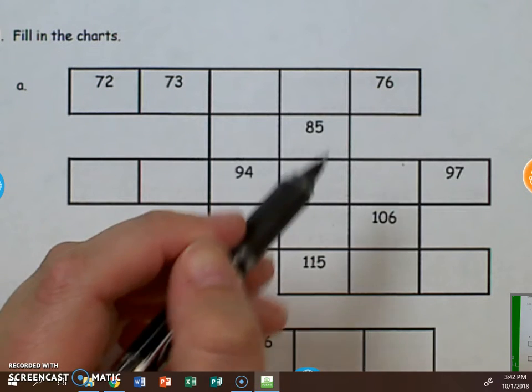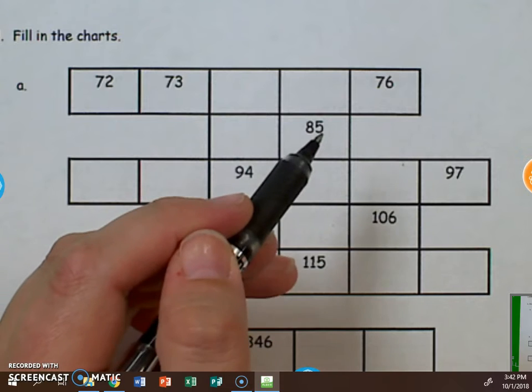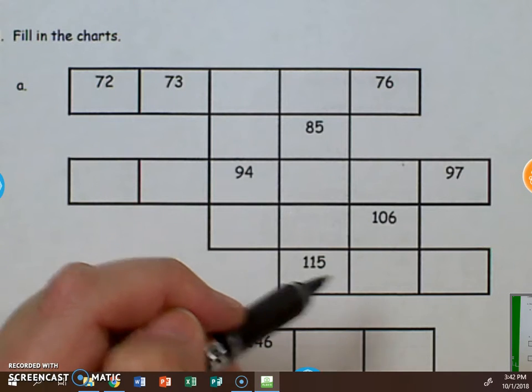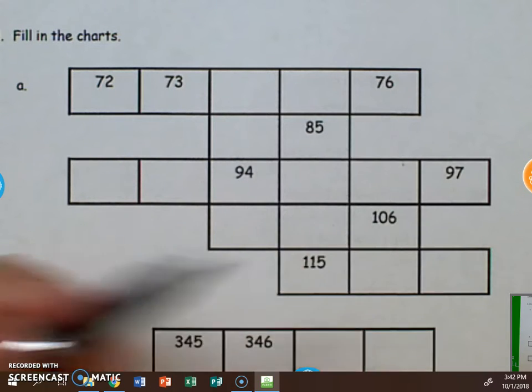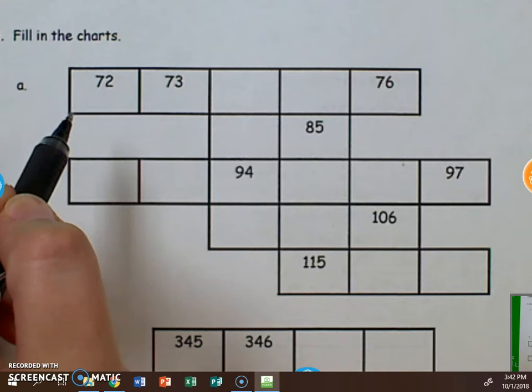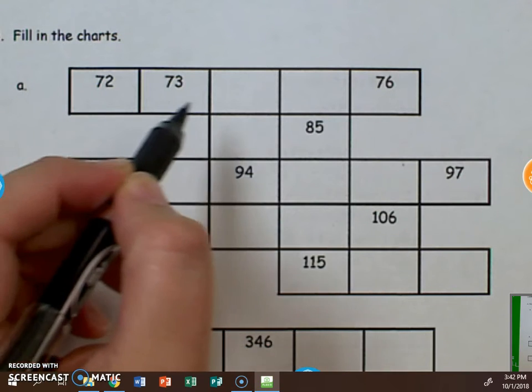Then we have to look at the columns. What do we notice about them? Well, there's a 5 in the ones place here, a 6 in the ones place here. So looking at these further, we can say that these are counting by ones.